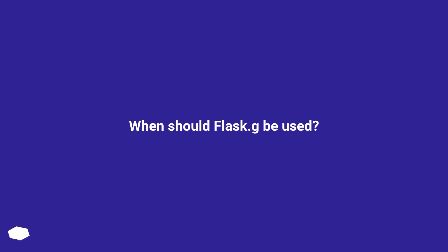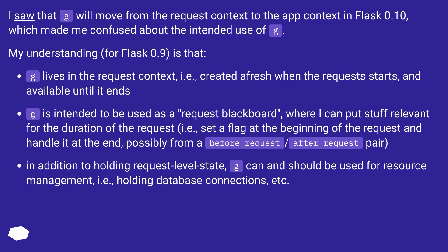When should flask.g be used? I saw that g will move from the request context to the app context in Flask 0.10, which made me confused about the intended use of g. My understanding for Flask 0.9 is that g lives in the request context — created afresh when the request starts and available until it ends. g is intended to be used as a request blackboard, where I can put stuff relevant for the duration of the request, setting a flag at the beginning and handling it at the end, possibly from a before_request/after_request pair.